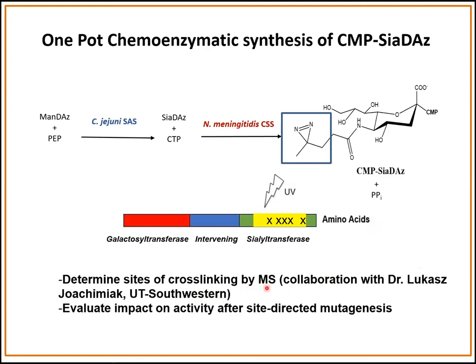Our goal is to use photocrosslinking to help us understand more about the binding pocket in this sialyltransferase domain. We'd like to determine the sites of crosslinking to the enzyme by mass spec in collaboration with Dr. Lukash from UT Southwestern. By determining which amino acids are in close proximity to where this compound binds, we can make site-directed mutants and see what effect those mutations have on activity of the serogroup W capsule polymerase.